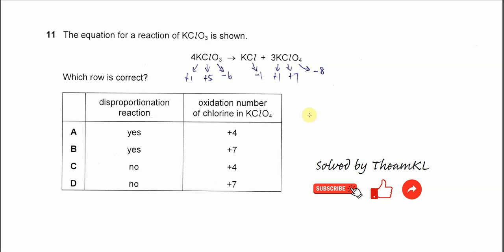Question 11: The equation for the reaction of KClO3 is shown. KClO3 produces KCl and KClO4, these two compounds. Which row is correct? We start from the oxidation number first. Oxidation number of chlorine in KClO3.